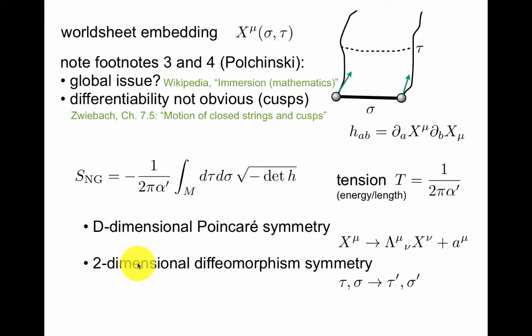This is the two-dimensional diffeomorphism symmetry, that you can change coordinates on the worldsheet. Tau and sigma could go to tau prime and sigma prime. This is an invariance of this action. This is manifest here, because this is an area, and the area doesn't change under the relabeling of coordinates.